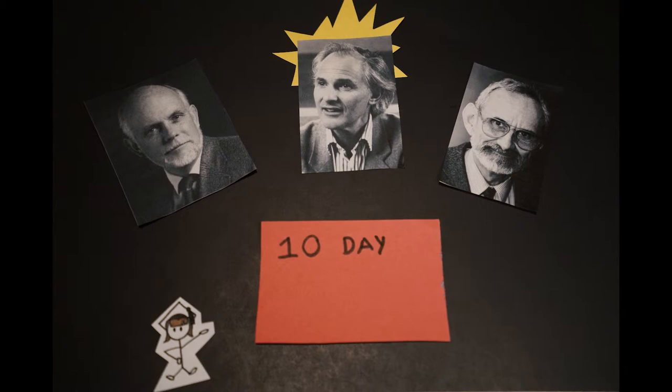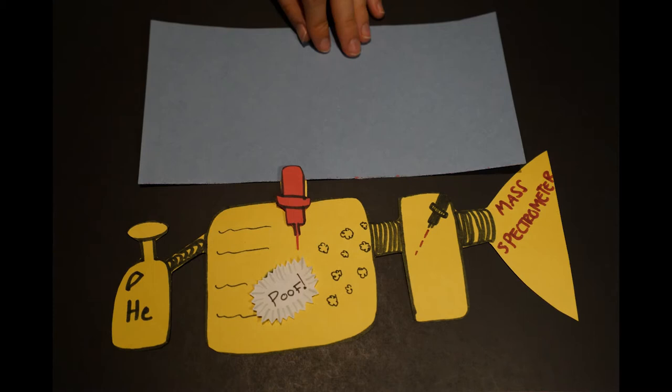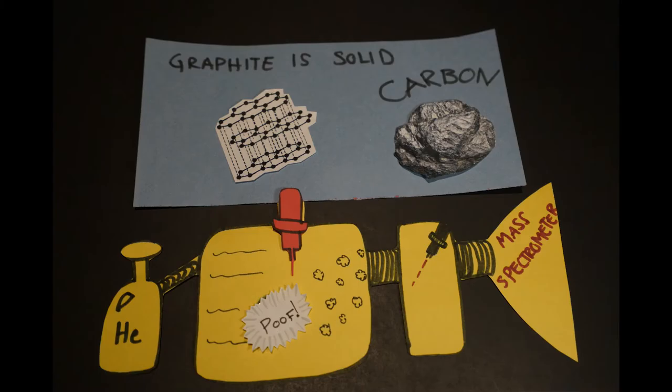So, the scientists gathered for 10 days and used the supersonic cluster beam to look for carbon snakes—I mean, chains. The laser would vaporize graphite. Graphite is one form of solid carbon. We use graphite for our pencil lead.